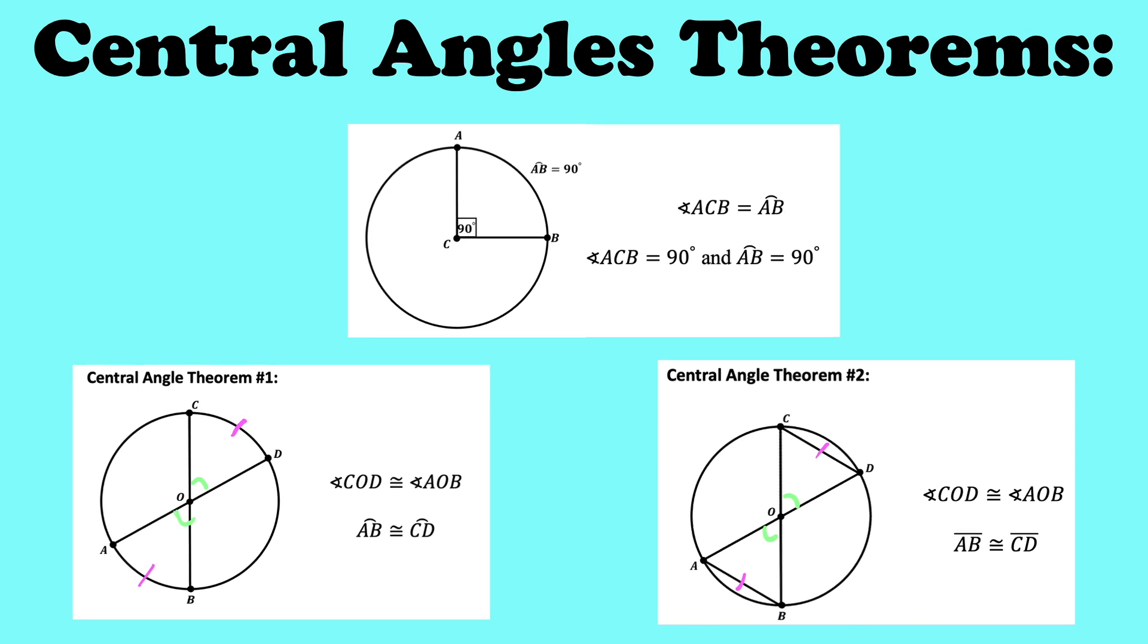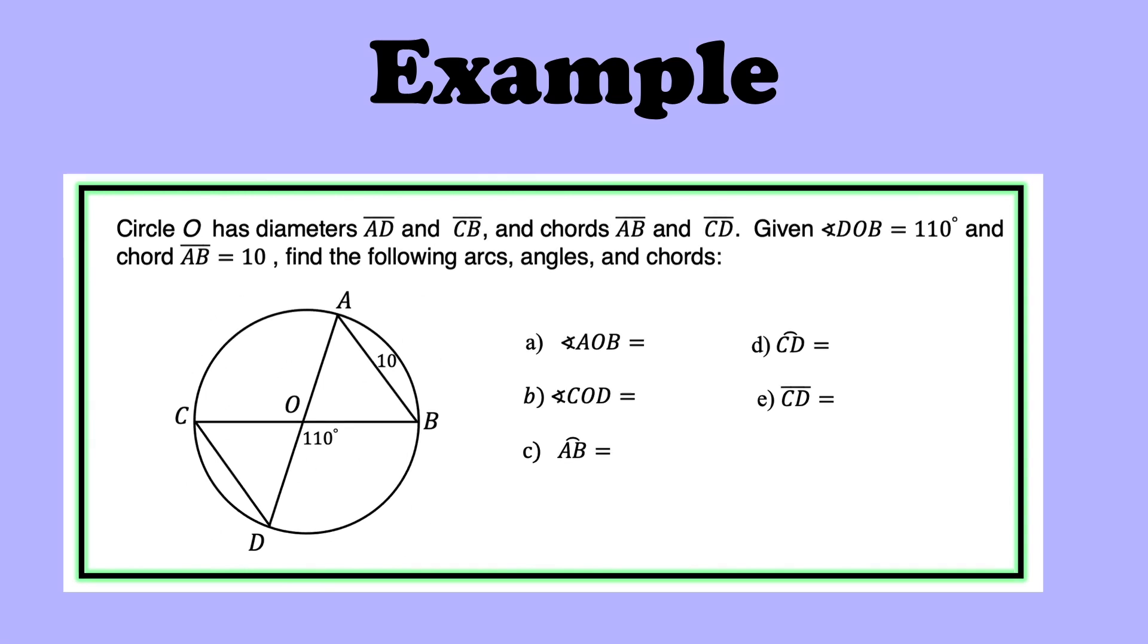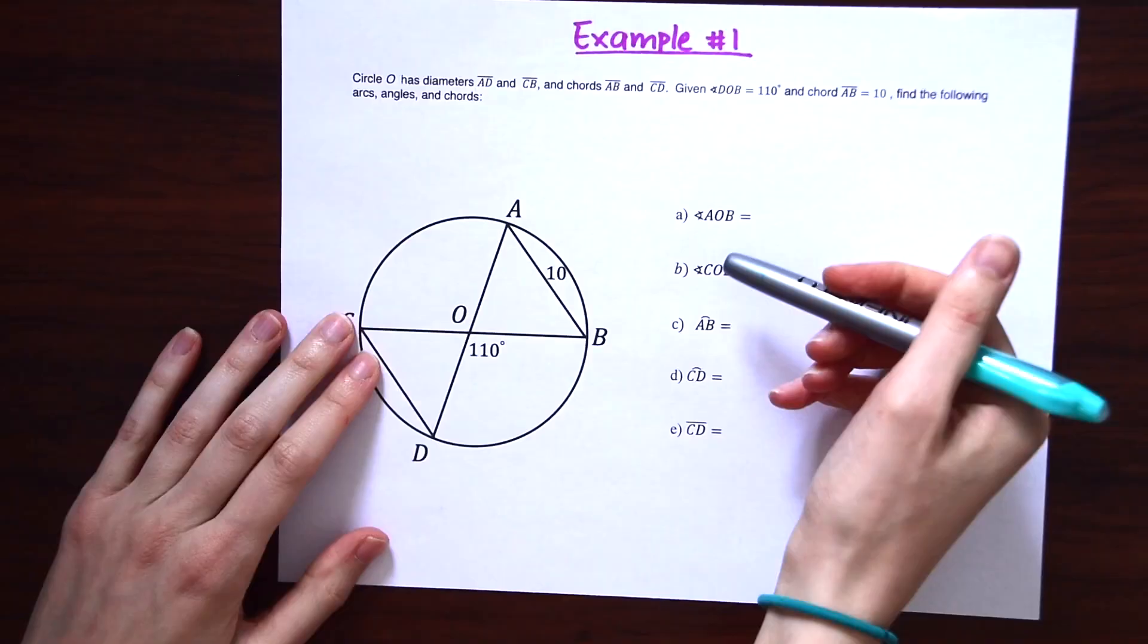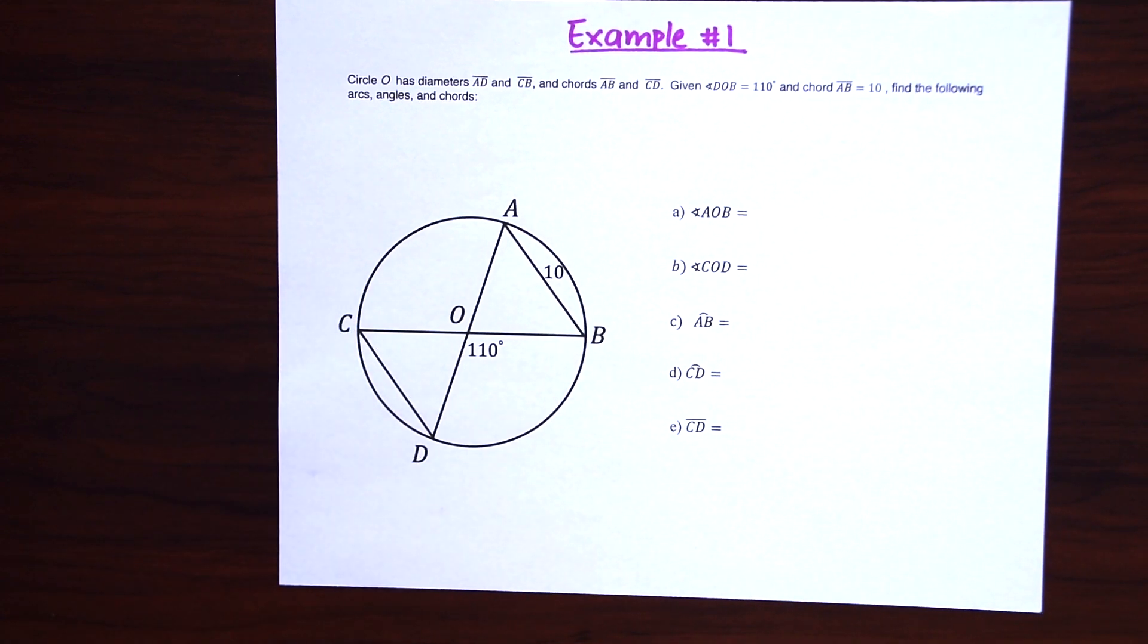And when you're ready, we have an example where we'll have to apply our theorems to the question. So our question says, circle O has diameters AD and CB and chords AB and CD. Given angle DOB equals 110 degrees and chords AB equals 10, find the following arcs, angles, and chords. So then we need to find all these different arcs, angles, and chords. So let's just look at this one step at a time.